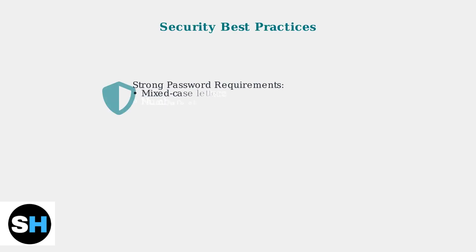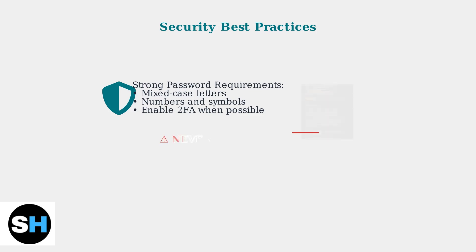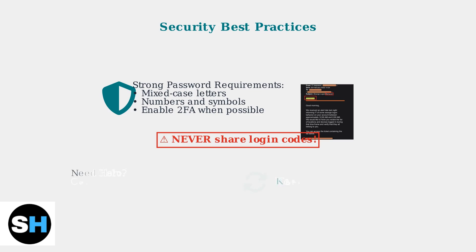Security is crucial when using the Spark eDriver app — you must protect your account from unauthorized access and potential scams. Be aware of scams and never share your login codes with anyone, as scammers may try to trick you into revealing account information. Keep your app updated for improved security. If you have verification issues, contact support at 855-743-457 and press Option 1 for application assistance.